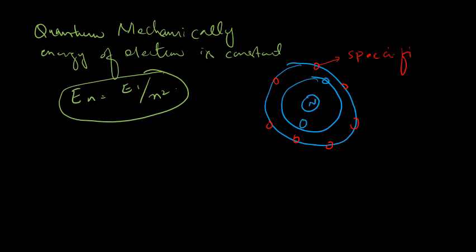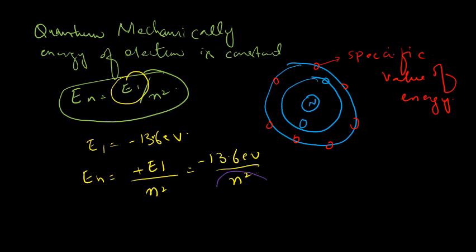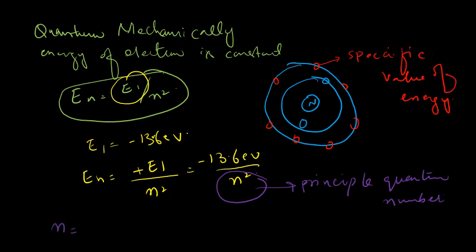This is the only possible value that the electron can take when it revolves around the nucleus in different shells. When electrons are revolving within the same energy shell, the energy is given by En = E1/n², where E1 is the energy of the electron in the first Bohr orbit, equal to −13.6 eV. We can also write this as En = −13.6/n² eV. Here, n is the principal quantum number.